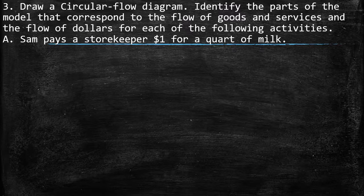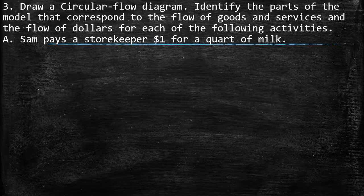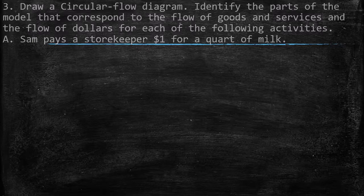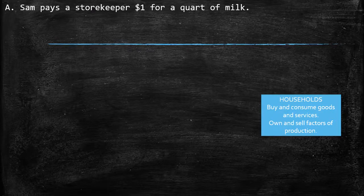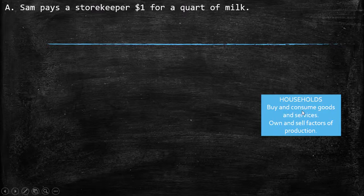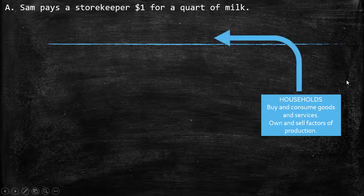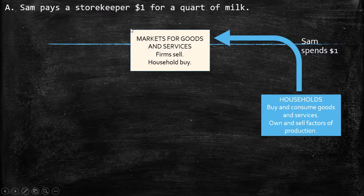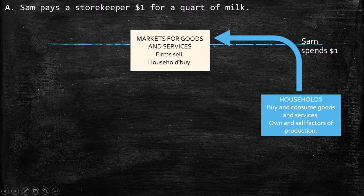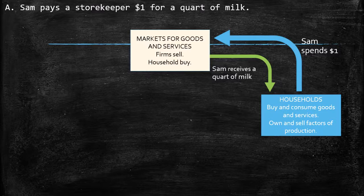The third exercise: draw a circular flow diagram and identify the parts corresponding to the flow of goods and services and the flow of dollars for each activity. The first activity is Sam pays a storekeeper $1 for a quart of milk. Sam belongs to households, and here households buy consumer goods and services. He is buying a quart of milk — this is the flow of milk, and the $1 is the flow of dollars, which is the outer loop. Sam spends $1 at the market, which represents the markets for goods and services where households buy and firms sell. In exchange for the dollar, he receives a quart of milk.